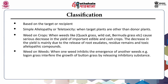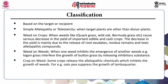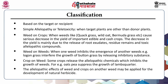Second is weed on weed, when one weed inhibits the emergence of another weed — known as weed-on-weed interference. For example, logon grass interferes with the growth of button grass by releasing inhibitory substances. Third is crop on weed interference, where some crops release allelopathic chemicals which inhibit the growth of weeds. For example, oats and pea suppress the growth of lamb's quarter. These allelopathic effects may be applied for the development of natural herbicides, i.e., biopesticides.